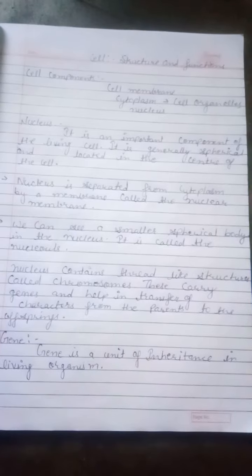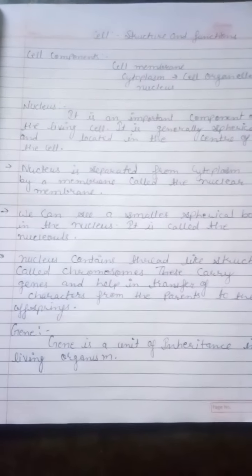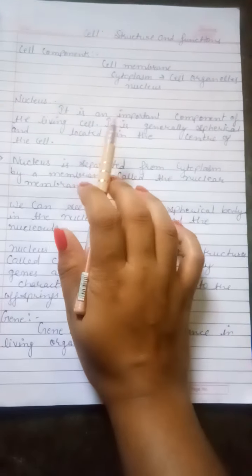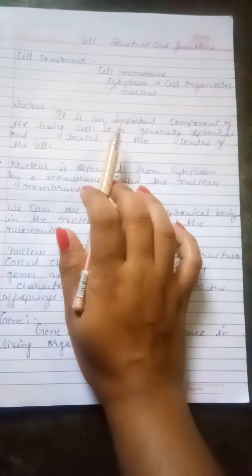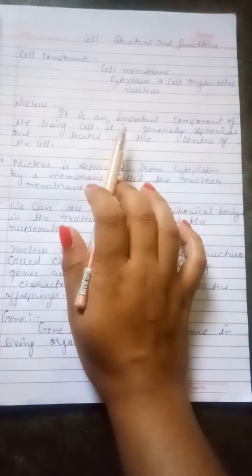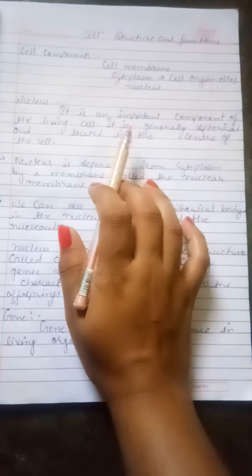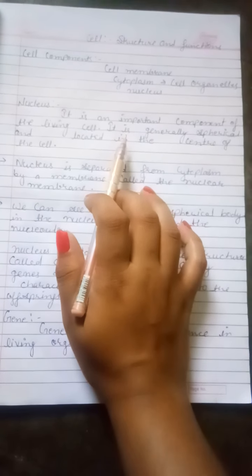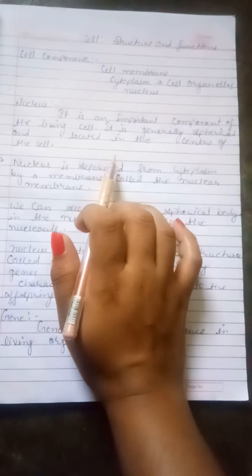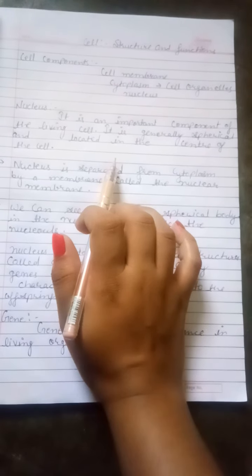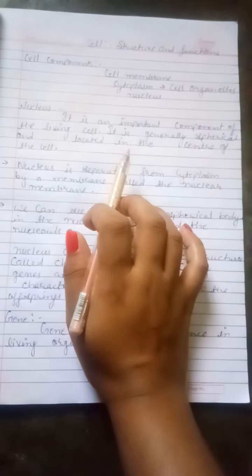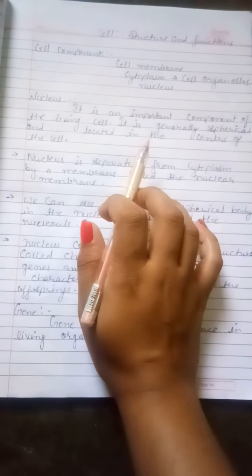Nucleus is an important component of living cells. It is generally spherical and located in the center of the cell. Nucleus is separated from cytoplasm by a membrane. This membrane is called the nuclear membrane.